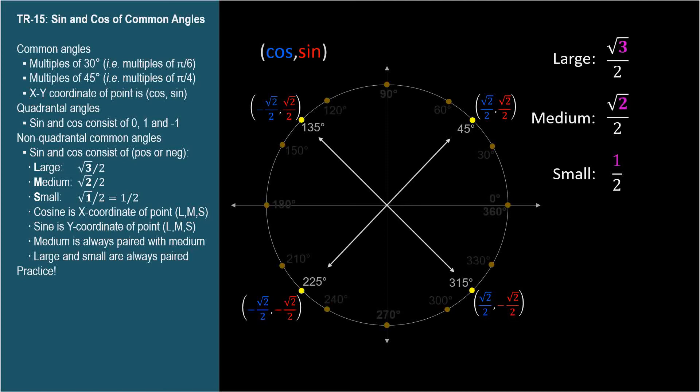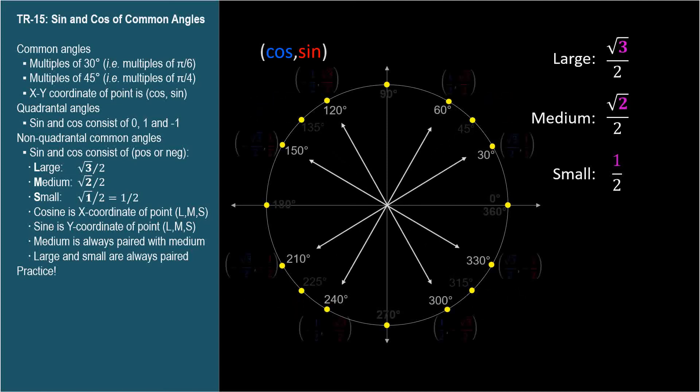The other angles, the multiples of thirty degrees, will always have a large and a small, though they can be in either order, and the signs can be positive or negative, depending on the quadrant.